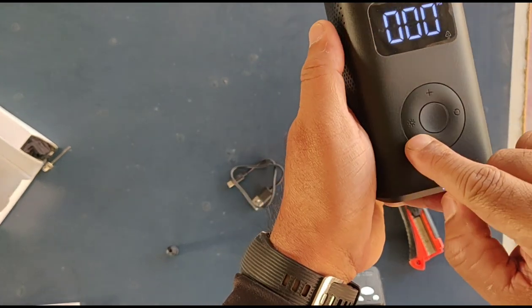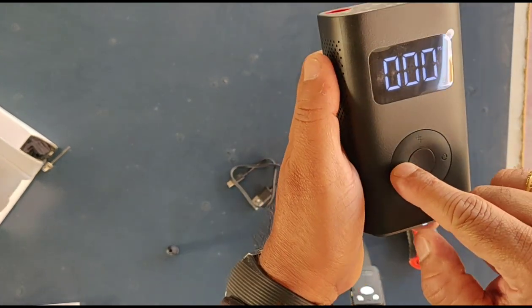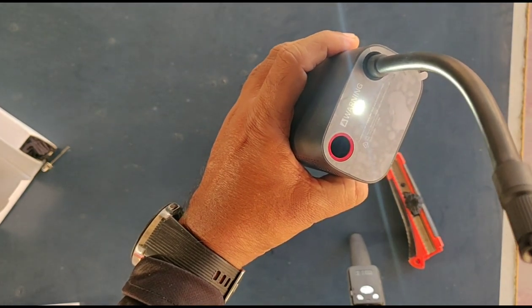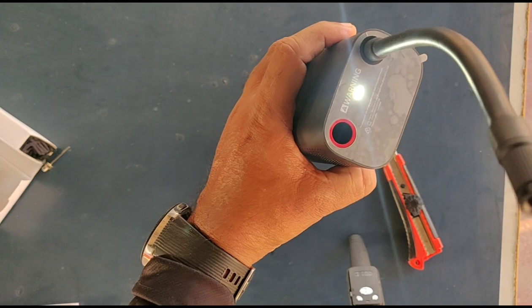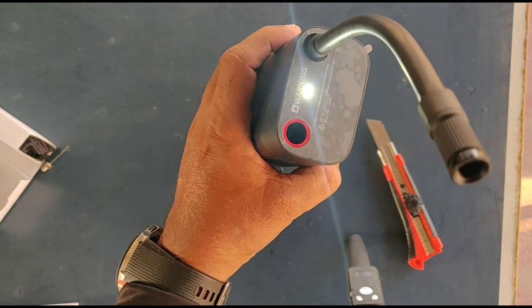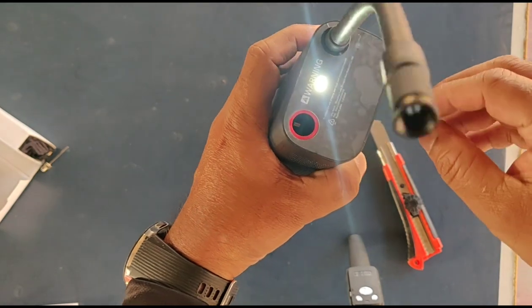It's a small button. You can see the light when you press it. The light comes on. It's very handy when you are in the dark and you want to put air for your car, scooter, bike, or even your cycle. This is very useful.